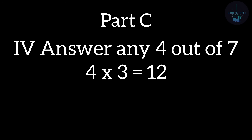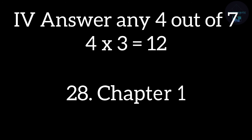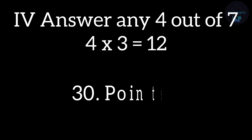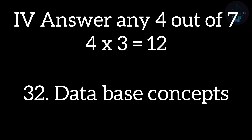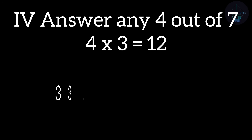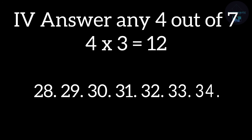Coming to Part C — 3-mark questions. You will have 7 questions from 7 different chapters, out of which you have to answer any 4. Question numbers go from 28 to 34: Question 28 from Chapter 1 (Typical Configuration of Computer System); Question 29 from Data Structures; Question 30 from Pointers; Question 31 from Data File Handling; Question 32 from Database Concepts; Question 33 from E-Commerce; and Question 34 from HTML (Web Designing). Concentrate on any 4 chapters only.